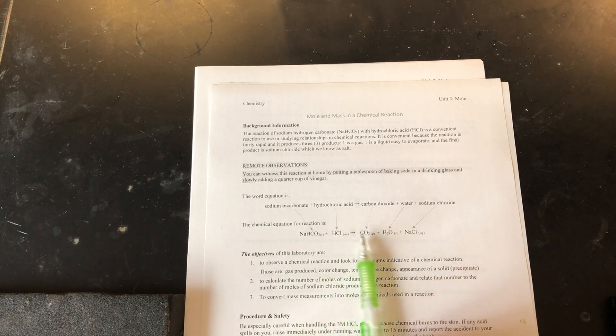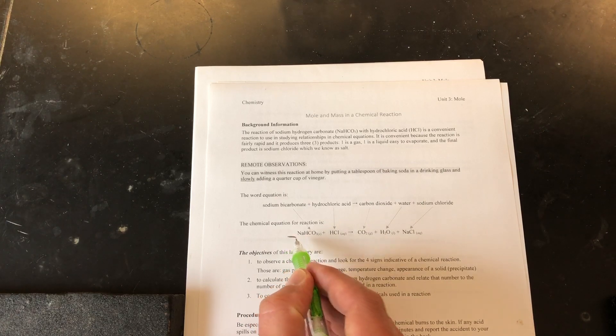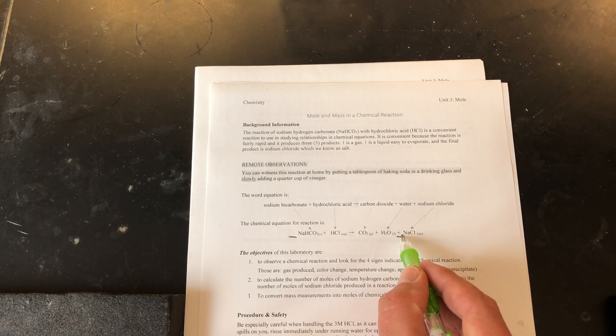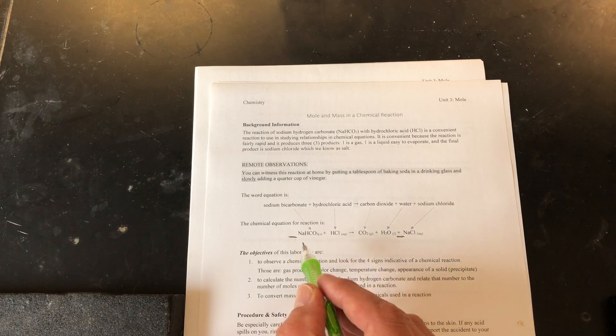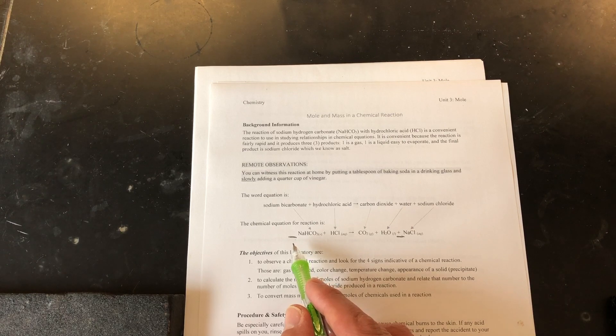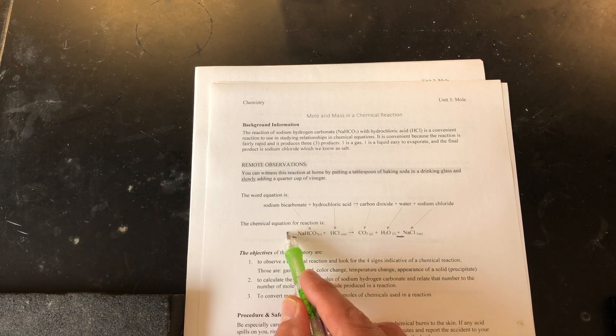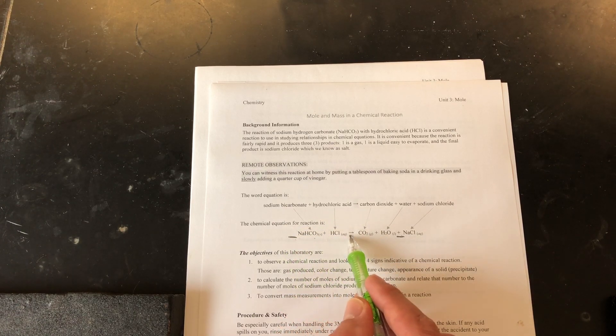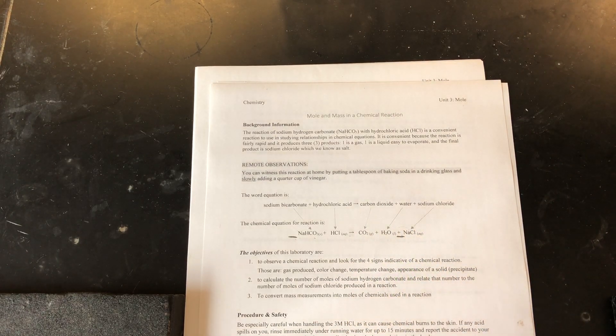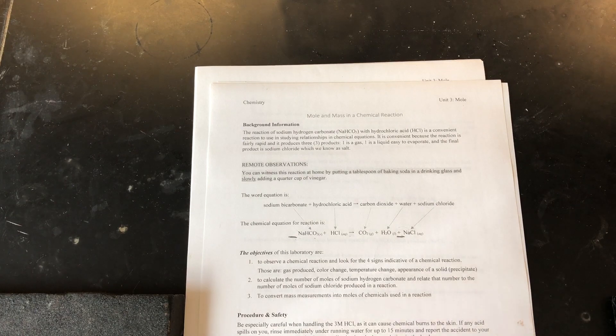After balancing this equation, the coefficients that go in front of the sodium bicarbonate and the sodium chloride, these coefficients, these numbers, will give you what the intended or the supposed mole ratio is. For every this many moles of sodium bicarbonate, you should get this many moles of sodium chloride. Your job is to now verify this ratio and see how close we came to that number.